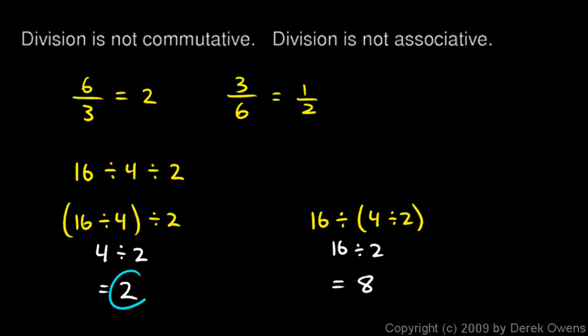And we take note that these answers aren't the same. Grouping them one way gives us a different answer than if we group them the other way. So division is not associative. Division is not commutative or associative. Or in other words, when you are dividing, the order matters.